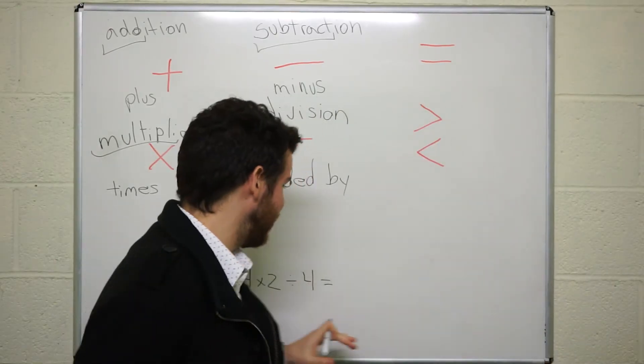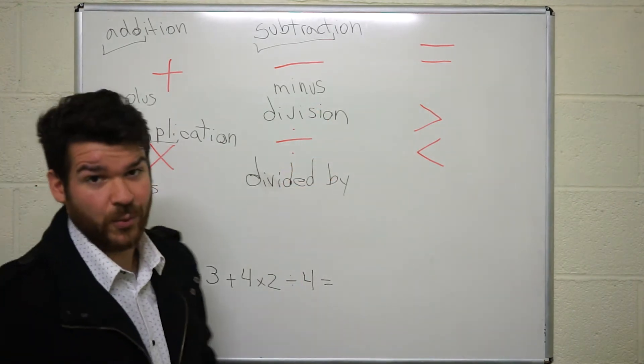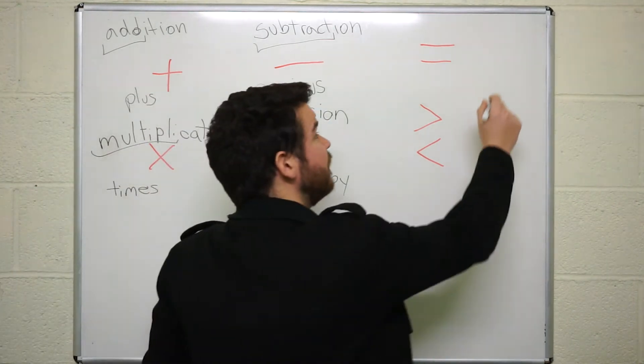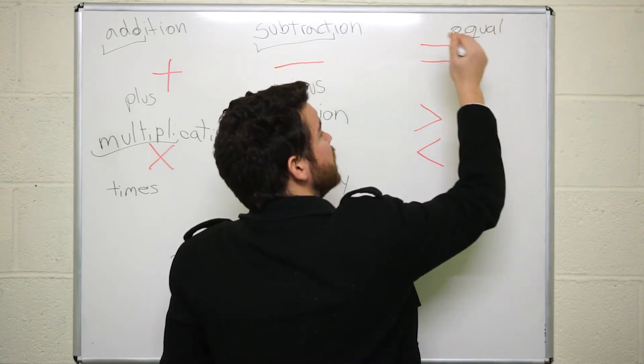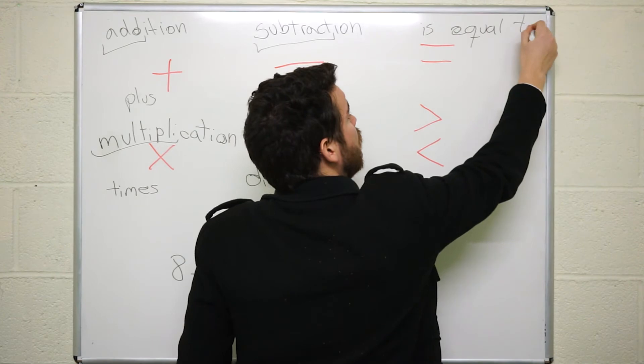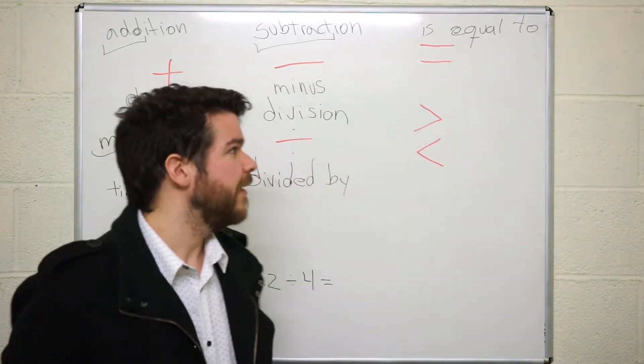Before we go and do this math problem here, let's talk about the other ones. So here we have equal, the equal sign. So you can say something is equal to, or just equals to.